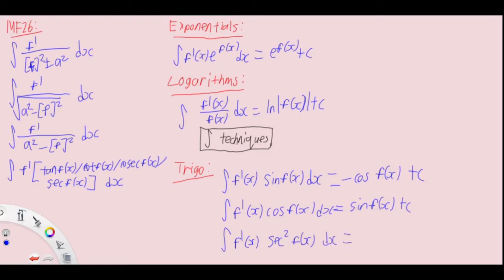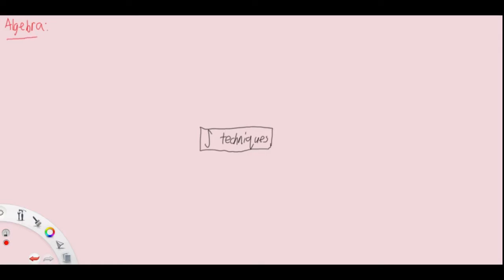Now the large algebra group. First, the simple one: (ax + b)^n. Increase the power by one, divide by the new power and the derivative a. n cannot be minus one.